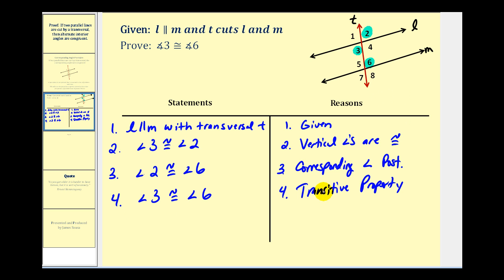And that's pretty much it for the proof showing that if two parallel lines are cut by a transversal, then alternate interior angles are congruent. I hope you found this helpful.